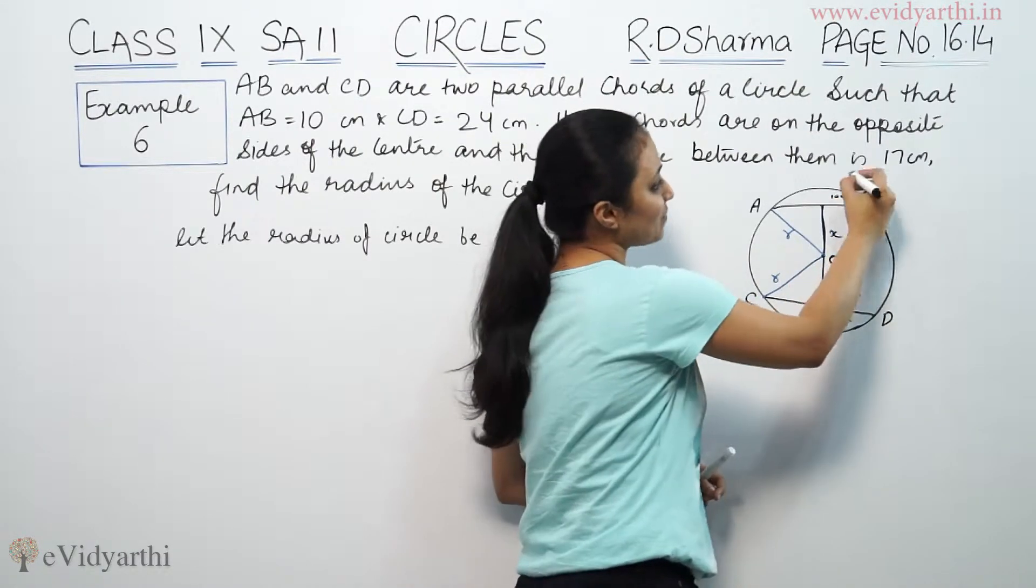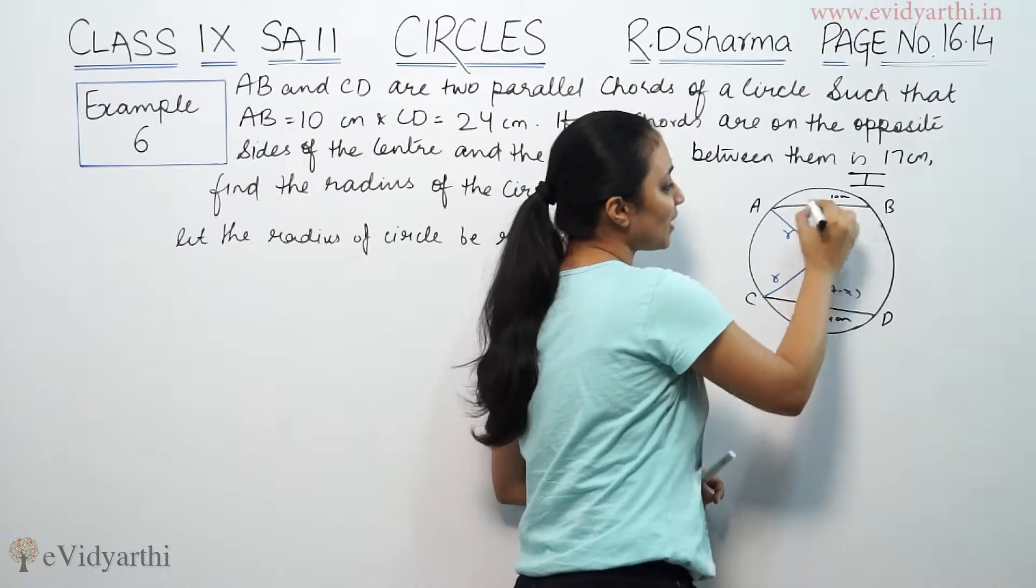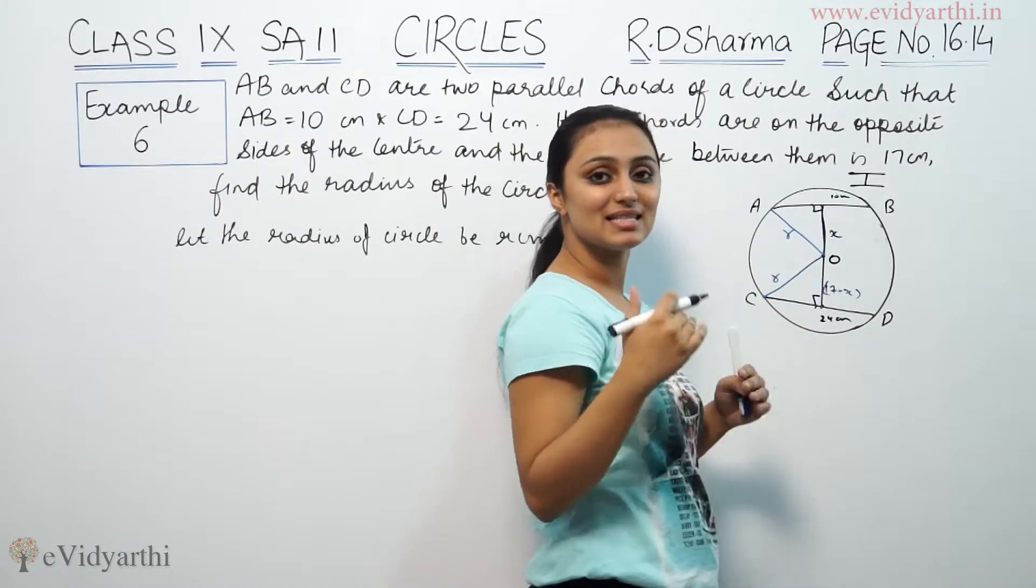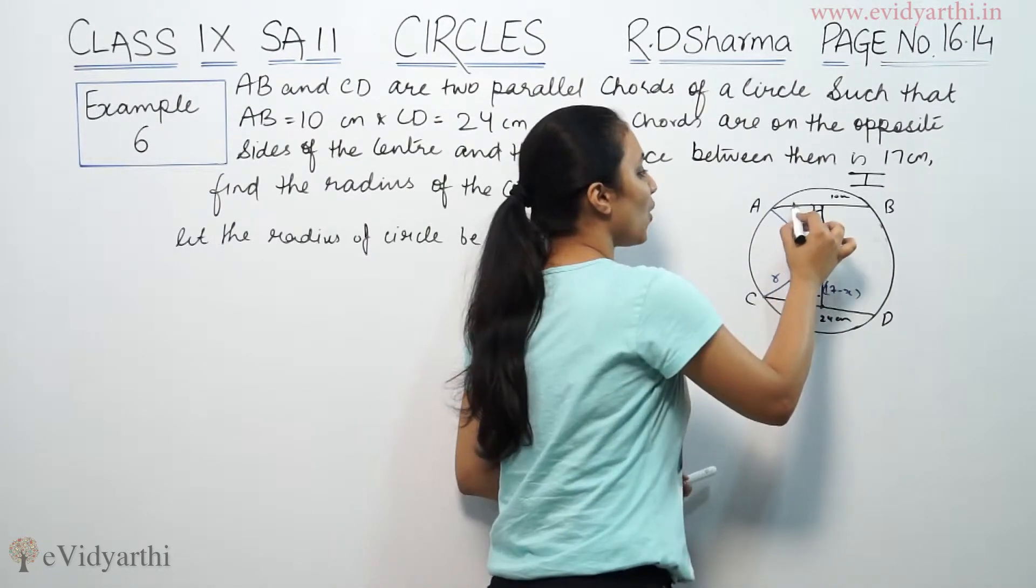If it is diameter, it will be straight. And this line is parallel and this line is parallel. That means it will be perpendicular. So if it is perpendicular to chord from center, it will bisect the chord. So this chord is 2 halves.